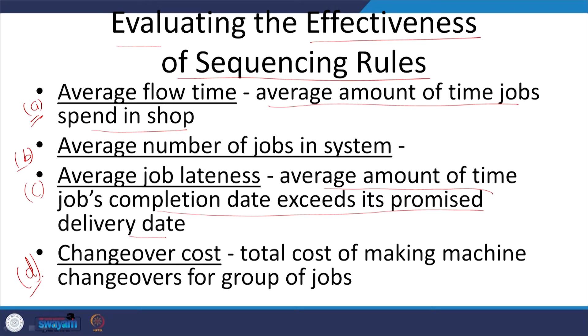Airlines measure their productivity based on average delay, giving quality certifications to those maintaining high efficiency. Another important criterion is changeover cost — the total cost of making machine changeovers for a group of jobs. As multiple jobs A, B, C, D, E are made on the same machine one after another, what is the total changeover cost? With the right sequence, you can minimize the changeover cost. We calculate these costs for various sequencing rules and choose the one giving minimum cost for that particular job shop.